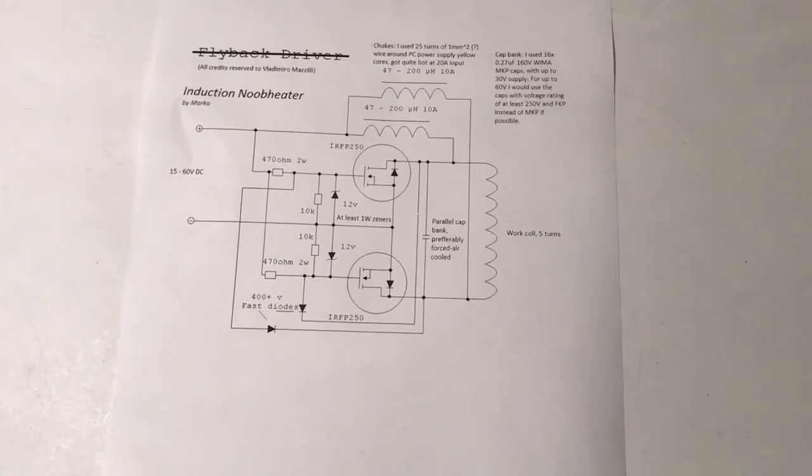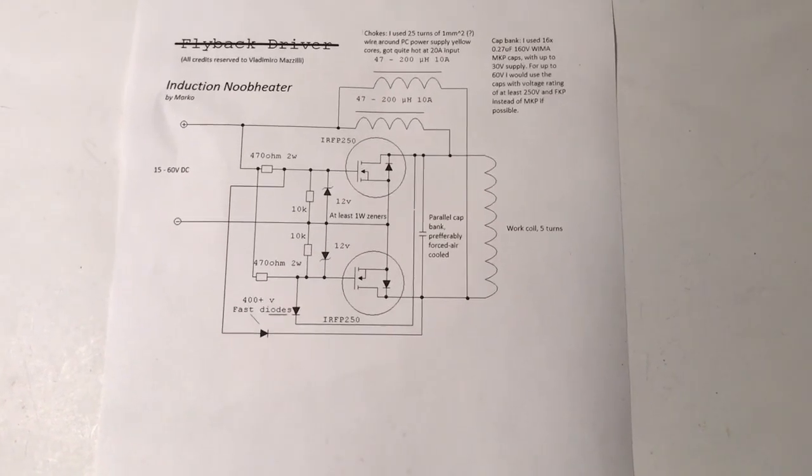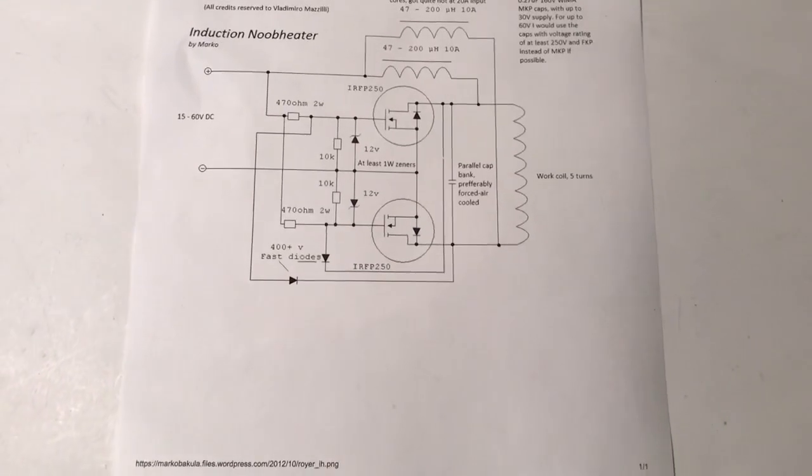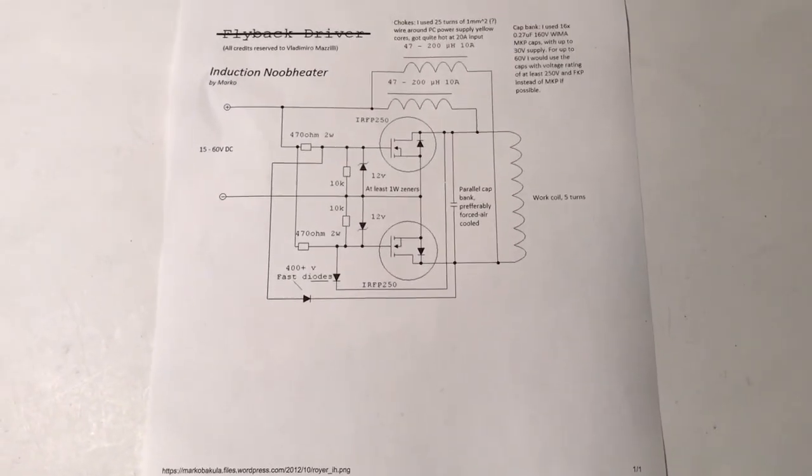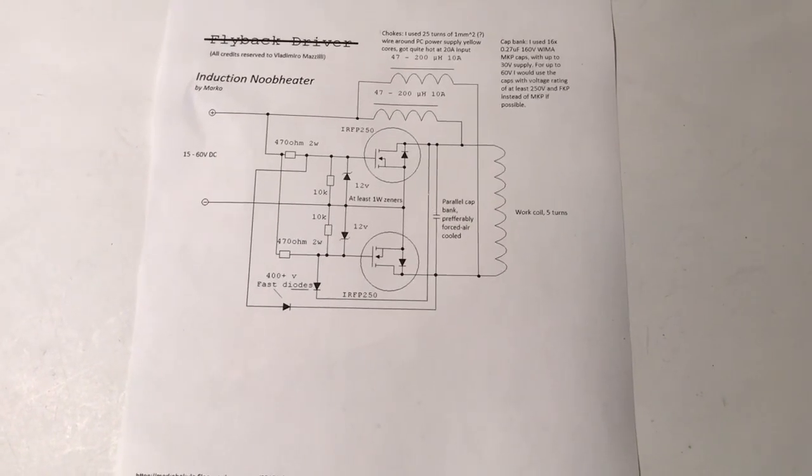Today I wanted to explore what would happen if, instead of having a work coil shown on the right here, or a primary for a flyback transformer, what if we just connected that output directly to a light bulb. So let's see what happens. I'm kind of curious about this.